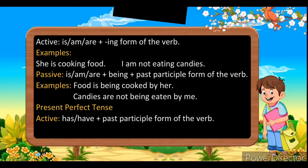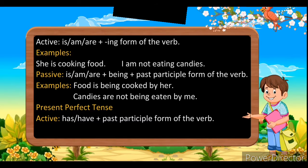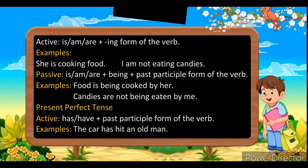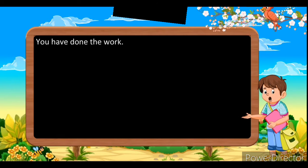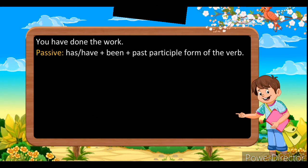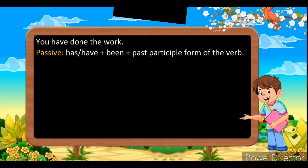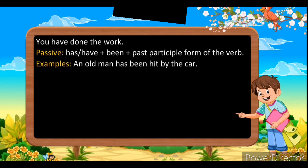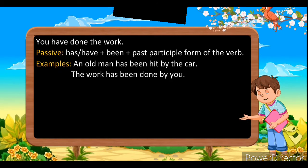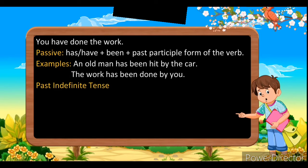Present perfect tense: in active voice, use has/have plus the verb's third form. For example: 'The car has hit an old man'; 'You have done the work.' To change it into passive, use has/have plus 'been' plus the verb's third form. Examples: 'An old man has been hit by the car'; 'The work has been done by you.'